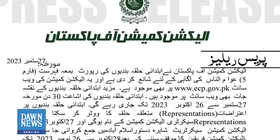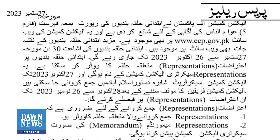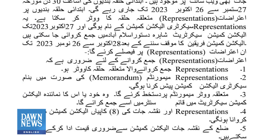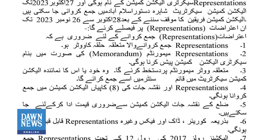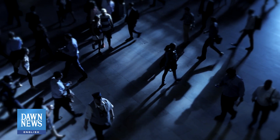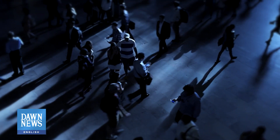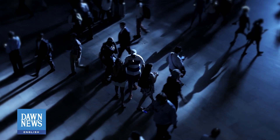The Election Commission of Pakistan has released preliminary lists of constituency delimitation for upcoming elections, which were initially scheduled to be completed by 14th December but have been expedited to 30th November. The initial delimitation reveals population distributions in National Assembly constituencies.